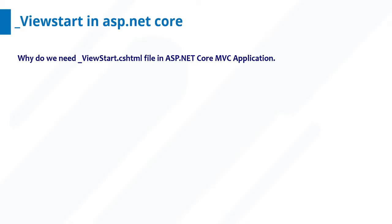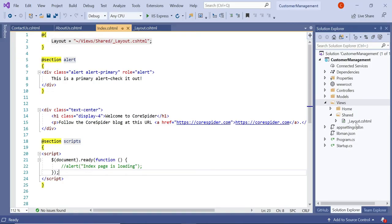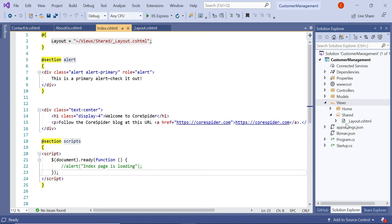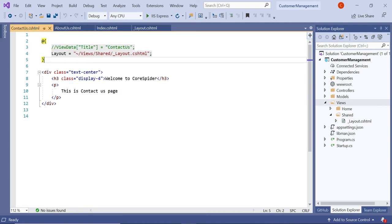Let's first discuss why you need the _ViewStart.cshtml file in an ASP.NET Core MVC application. As of now, we have used the layout property to associate a view with a layout using code like: layout equal to views/shared/_Layout.cshtml. You can see that this layout.cshtml is implemented in the index.cshtml, and the physical path of the layout.cshtml is in the views/shared folder. This layout is also implemented in About Us and Contact Us views.